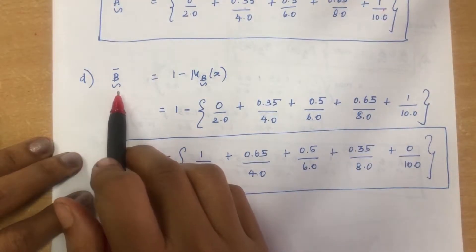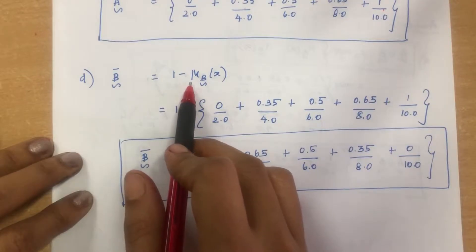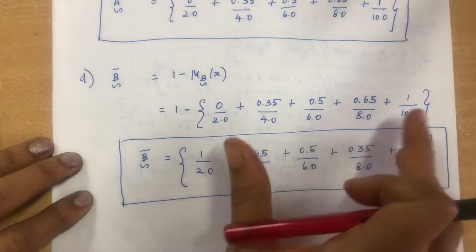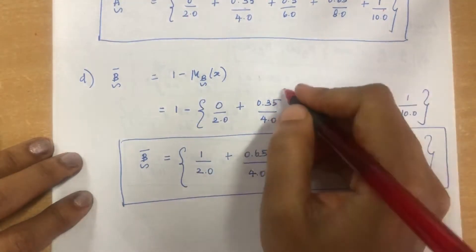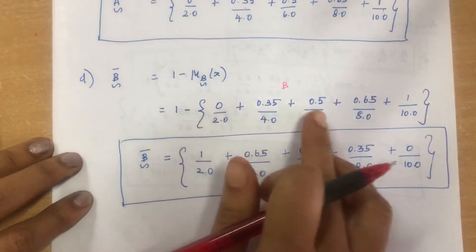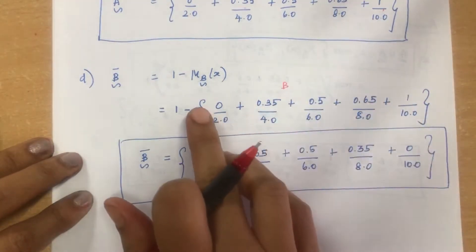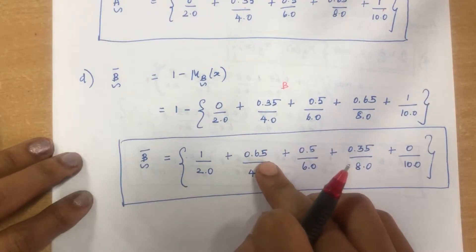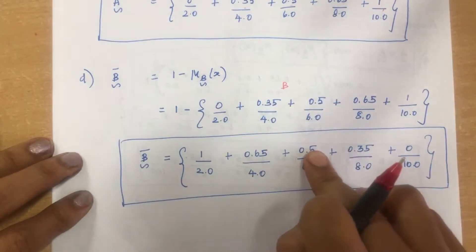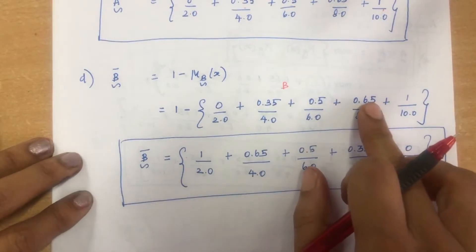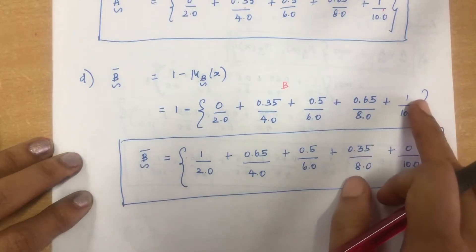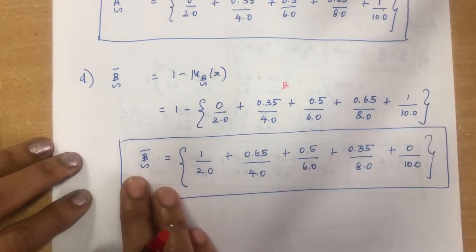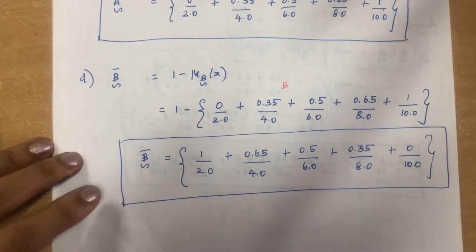Similarly, B complement (B bar) is 1 minus membership value of B. Computing: 1 − 0 = 1, 1 − 0.35 = 0.65, 1 − 0.5 = 0.5, 1 − 0.65 = 0.35, 1 − 1 = 0. So B bar = 1/2.0 + 0.65/4.0 + 0.5/6.0 + 0.35/8.0 + 0/10.0.